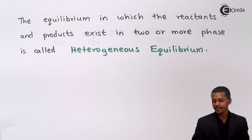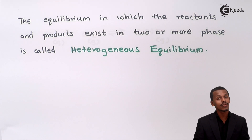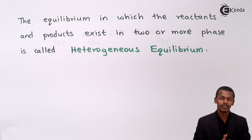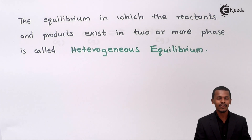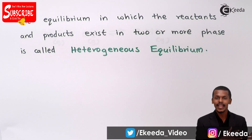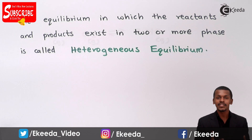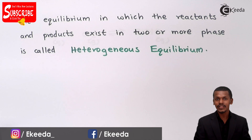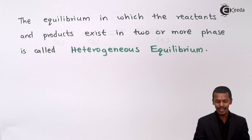Now let us move on to heterogeneous equilibrium. The equilibrium in which the reactants and products exist in two or more phases is known as heterogeneous equilibrium. When a reversible reaction reaches chemical equilibrium, the concentrations of reactants and products remain constant, but it is not necessary that they share the same phase — they can be of different phases, giving two or more phases at equilibrium.